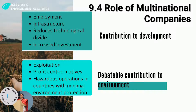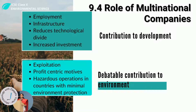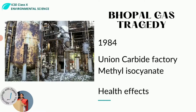In such countries they shift their working operations because they know they can get things done easily without worrying about the environment. Many have also argued that MNCs cause unemployment by moving plants to areas with cheaper labor. A major example of MNC-caused environmental harm in India is the Bhopal gas tragedy — one of the biggest industrial disasters in India, which happened on 3rd December 1984 at the Union Carbide pesticide factory in Bhopal, Madhya Pradesh.